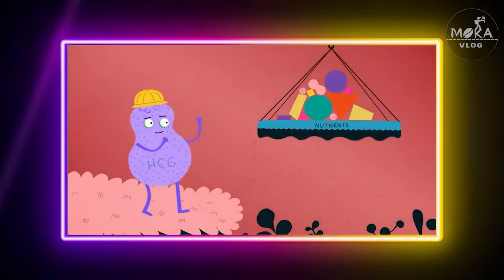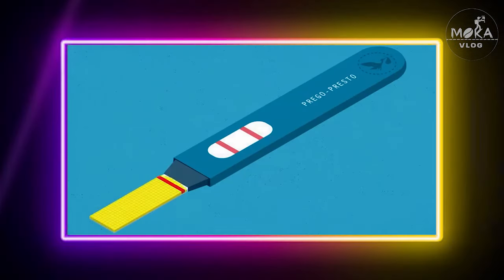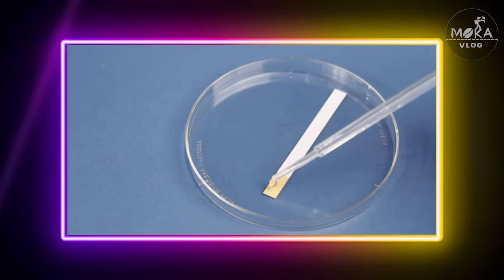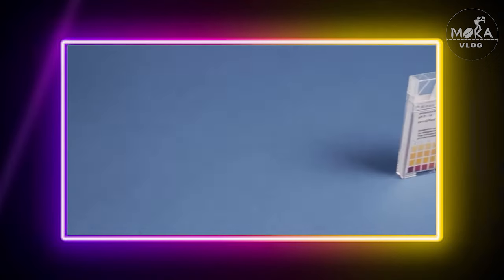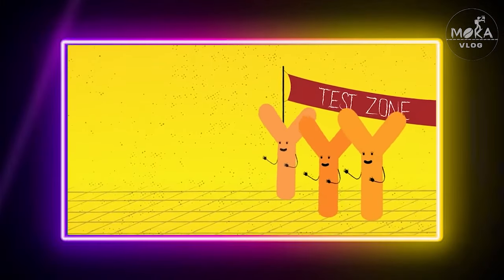When we start the pregnancy, we will drop the urine in this test. The drop will travel through the test strip. If you use the antibody, then the antibody will react with the HCG level.